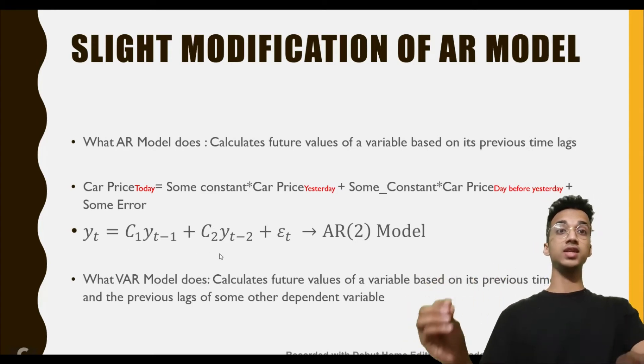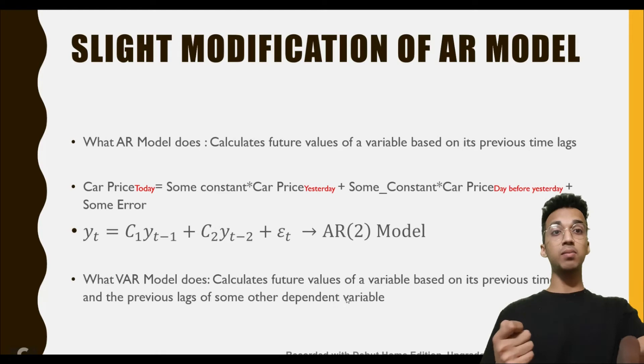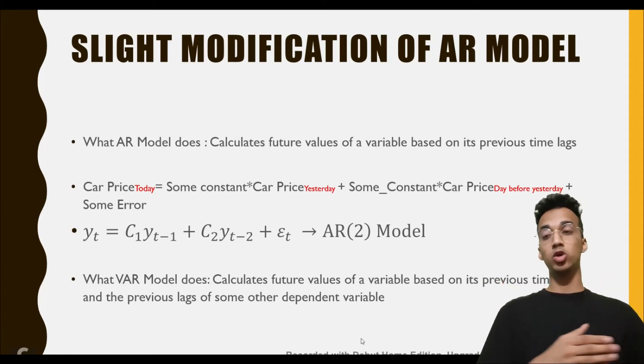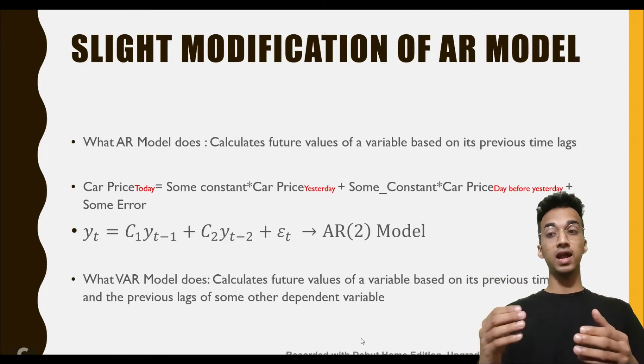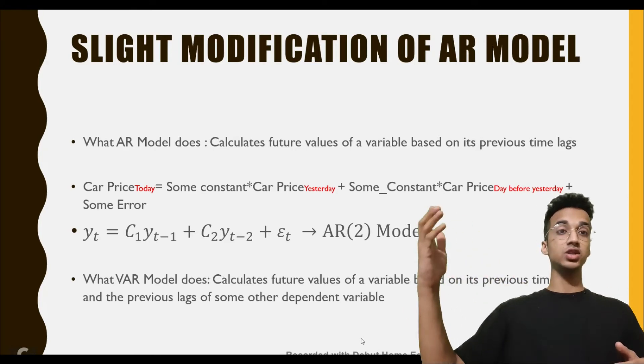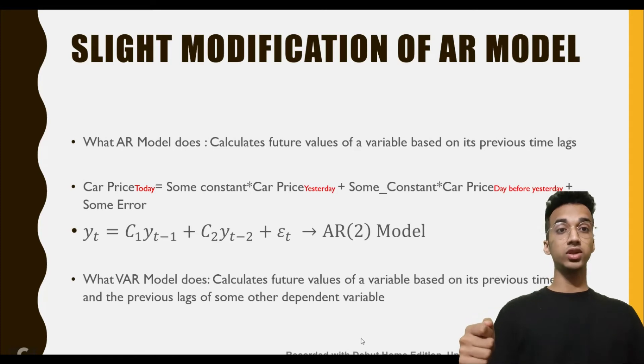Vector autoregression is very similar. It calculates the future values based on its own previous time lags plus the previous time lags of some other variable. Your car price today can be dependent on other factors as well, like the cost of public transport. As the cost of public transport increases, people would tend to buy cars, and as a result car prices could also increase. So these are two variables which are related to each other.